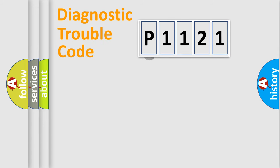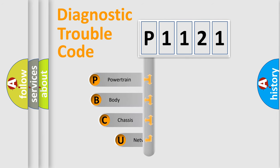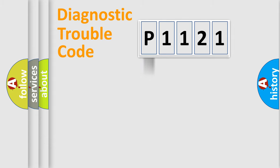First, let's look at the history of diagnostic fault code composition according to the OBD-2 protocol, which is unified for all automakers since 2000. We divide the electric system of the automobile into four basic units: Powertrain, Body, Chassis, and Network. This distribution is defined in the first character of the code.